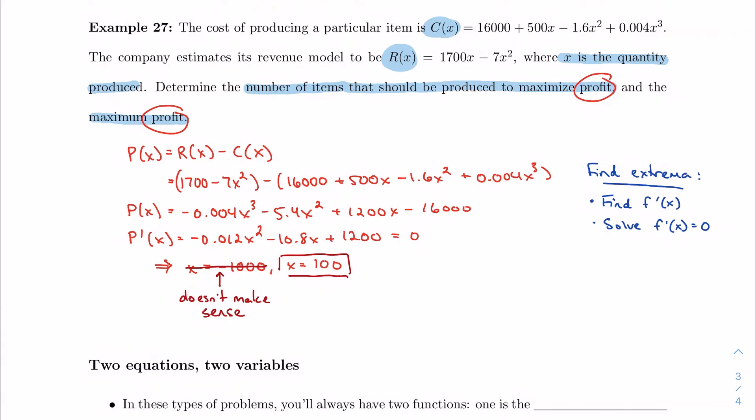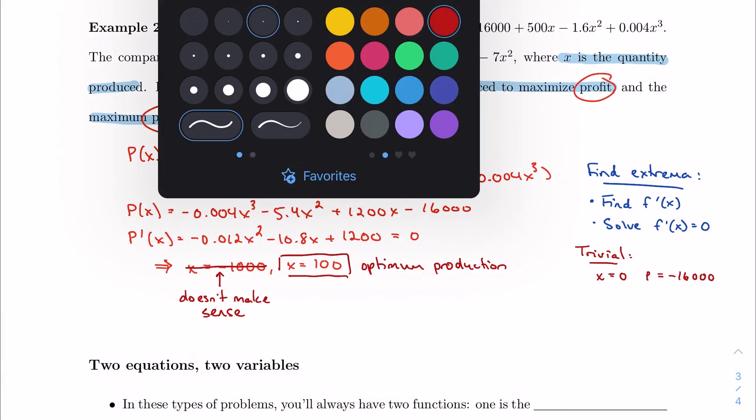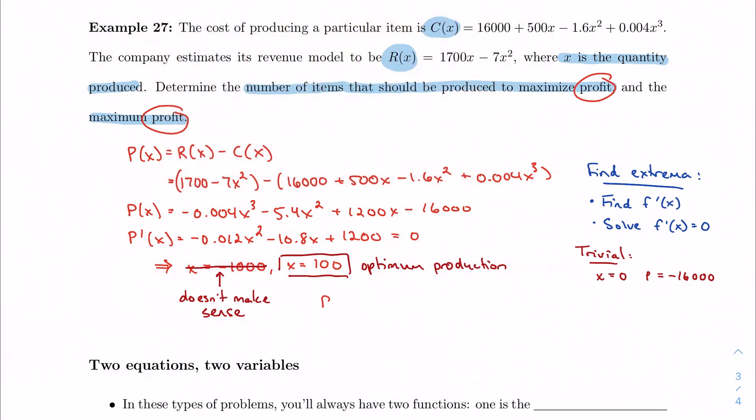So x equals 100 seems to be my best bet. If I think about maybe some trivial cases, theoretically I guess x equals zero could be something I don't want to consider, but it doesn't also make sense because then my profit would be negative 16000. And that's clearly not what I want if I'm trying to maximize my profit. So this seems to be my optimum production. If I want to maximize my profits, I should sell 100 units. How much do I make in profit if I sell 100 units? Well, I'm going to go back to my original profit equation. I've done this earlier to save ourselves some time. I get a profit of $46,000.